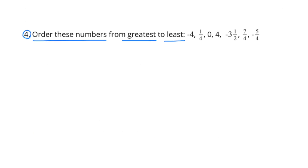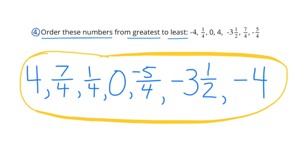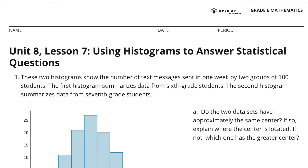Number 4: Order these numbers from greatest to least. We look for the largest positive numbers first. If we put these numbers in order from greatest to least, the order would be: 4, 7 fourths, 1 fourth, 0, negative 5 fourths, negative 3 and a half, and negative 4.